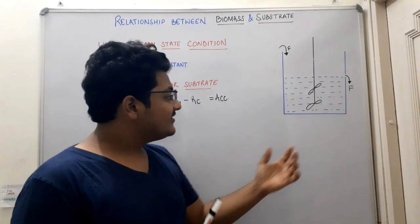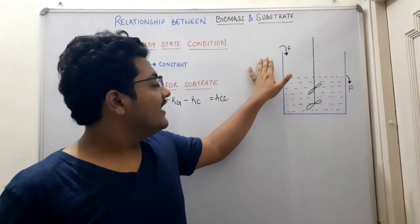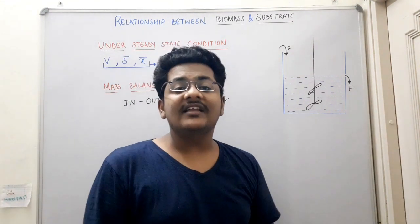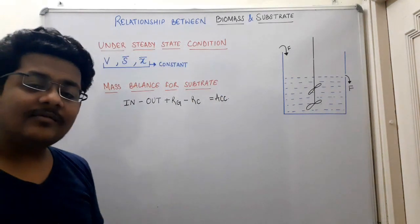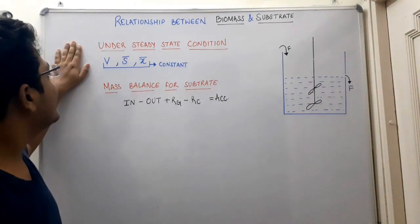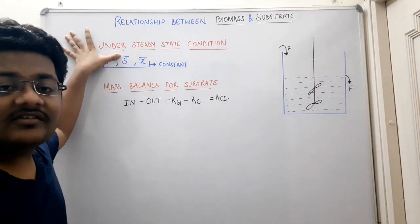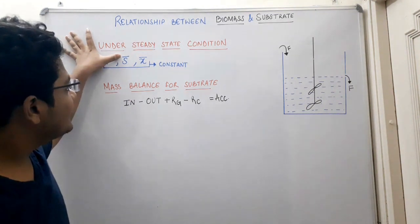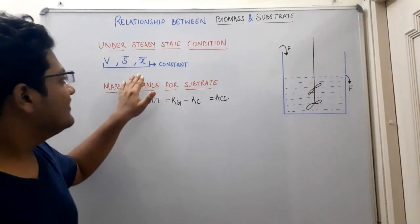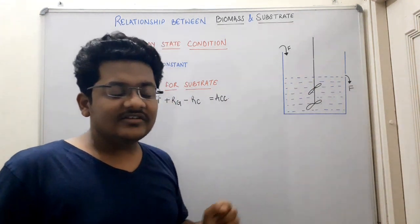I hope you remember this diagram for CSTR — that is continuous stirred tank reactor. In this, the inflow rate is F and the outflow rate is also F, so that we maintain a constant volume. Under steady state in a chemostat, certain parameters remain constant: volume, steady state substrate concentration S, which is present inside the homogeneous mixture, and steady state biomass concentration X, also present inside the homogeneous mixture.